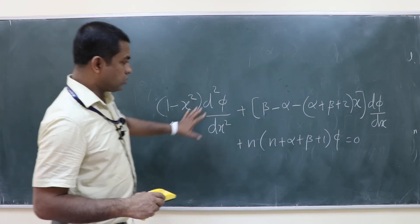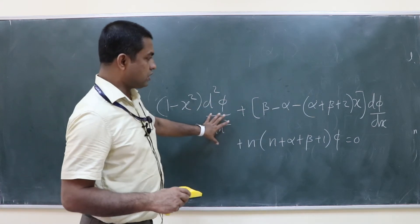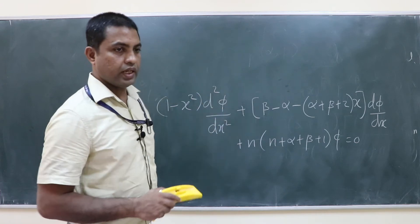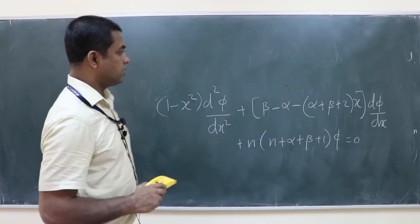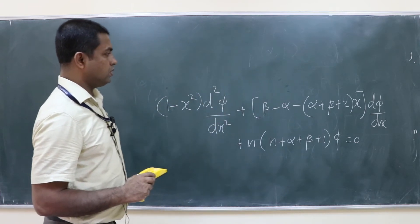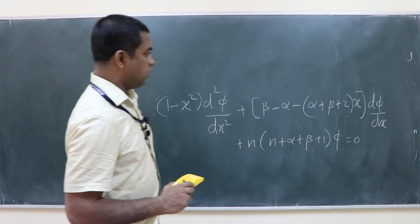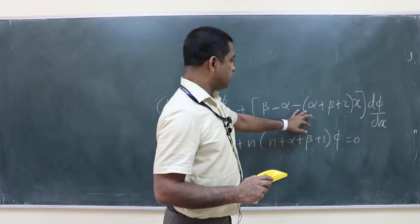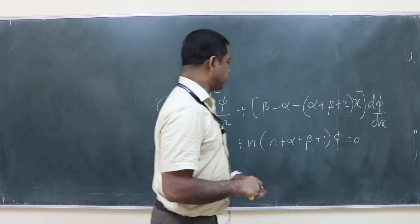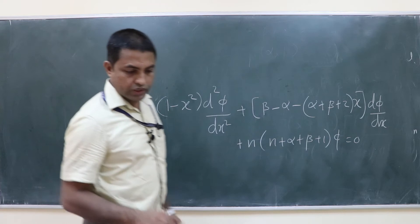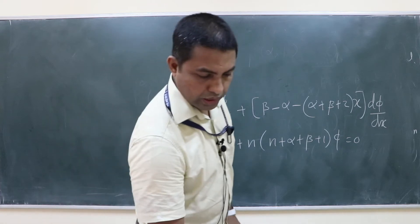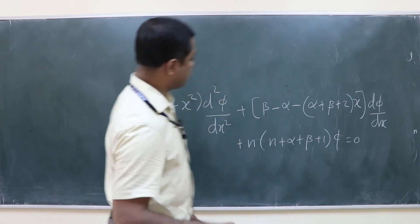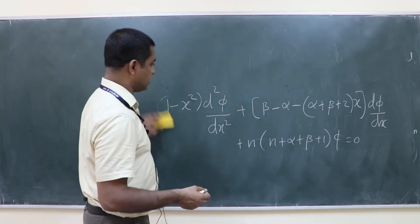The differential equation for the Jacobi polynomial has σ(x) = 1 − x² times the second derivative, plus [β − α − (α + β + 2)x] times dφ/dx, plus a constant term that depends on n, α, and β, equaling zero. The solution to this differential equation is the Jacobi polynomial for given α and β.